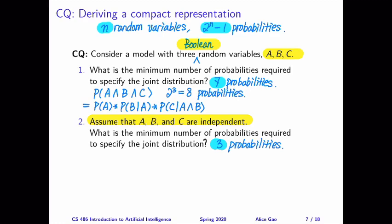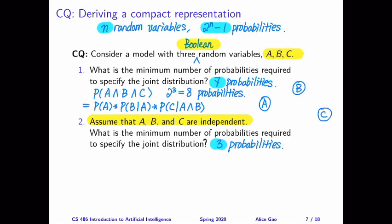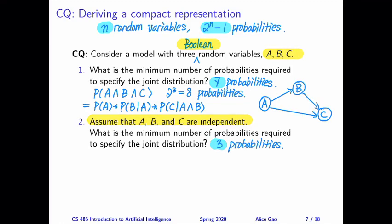So we have A, B, and C. A is just itself. B conditions on knowing A, so we use an arrow to represent that the value of A influences the probability of B. And C conditions on both A and B, so we represent that with two directed edges — one from A to C and one from B to C. This is one way of representing the relationships between these three variables.